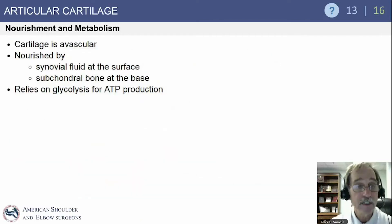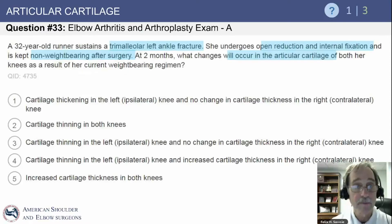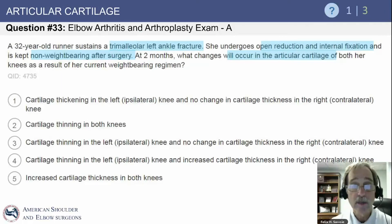Articular cartilage nourishment and metabolism: cartilage is avascular. It is nourished by the synovial fluid at the surface and subchondral bone at the base. It relies on glycolysis for ATP production.